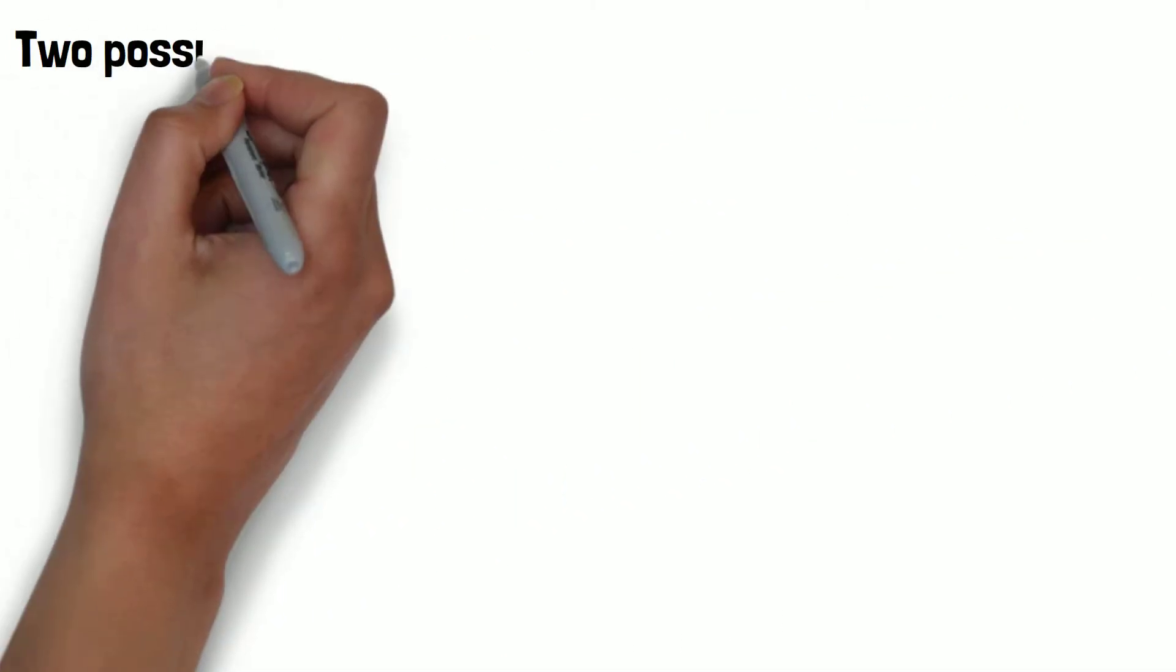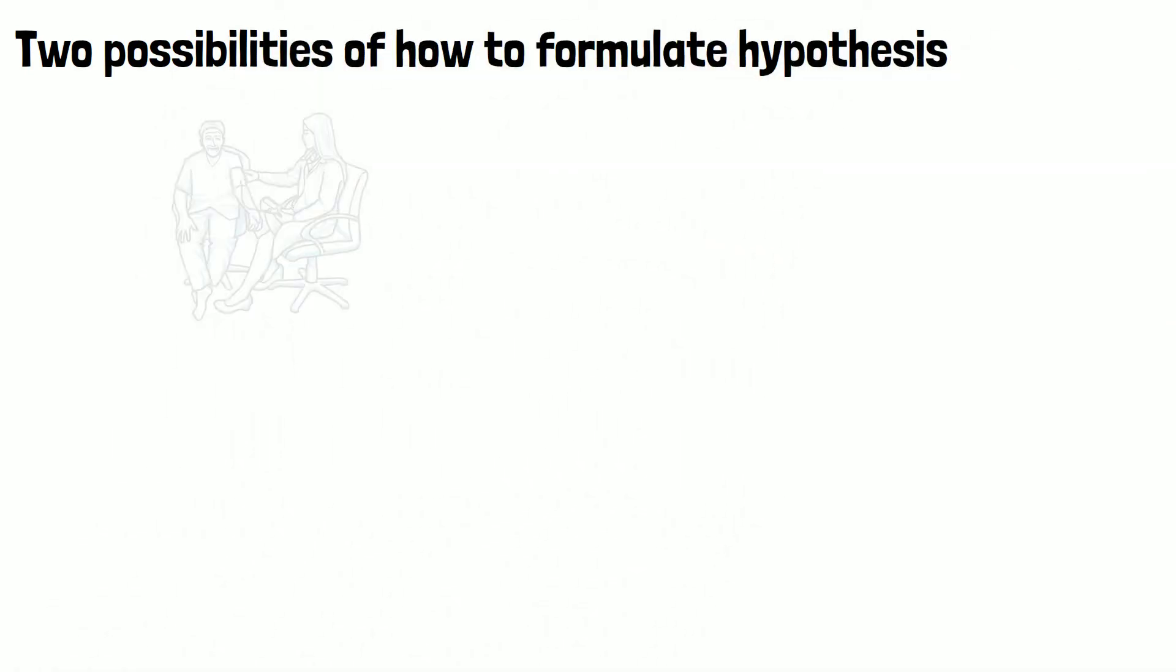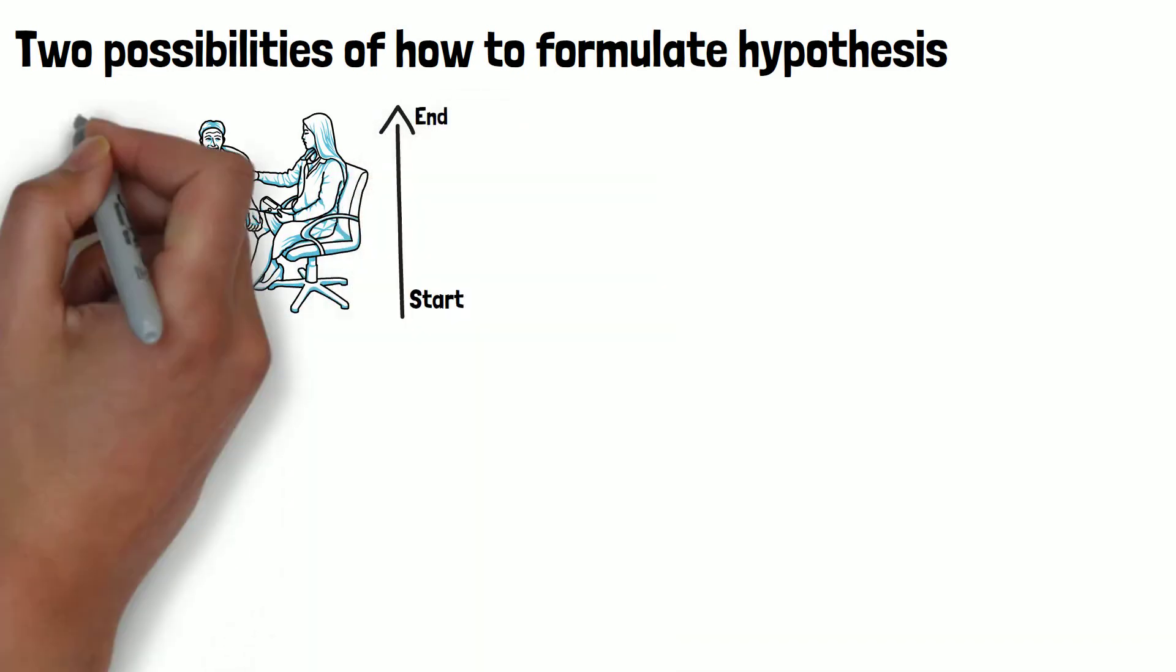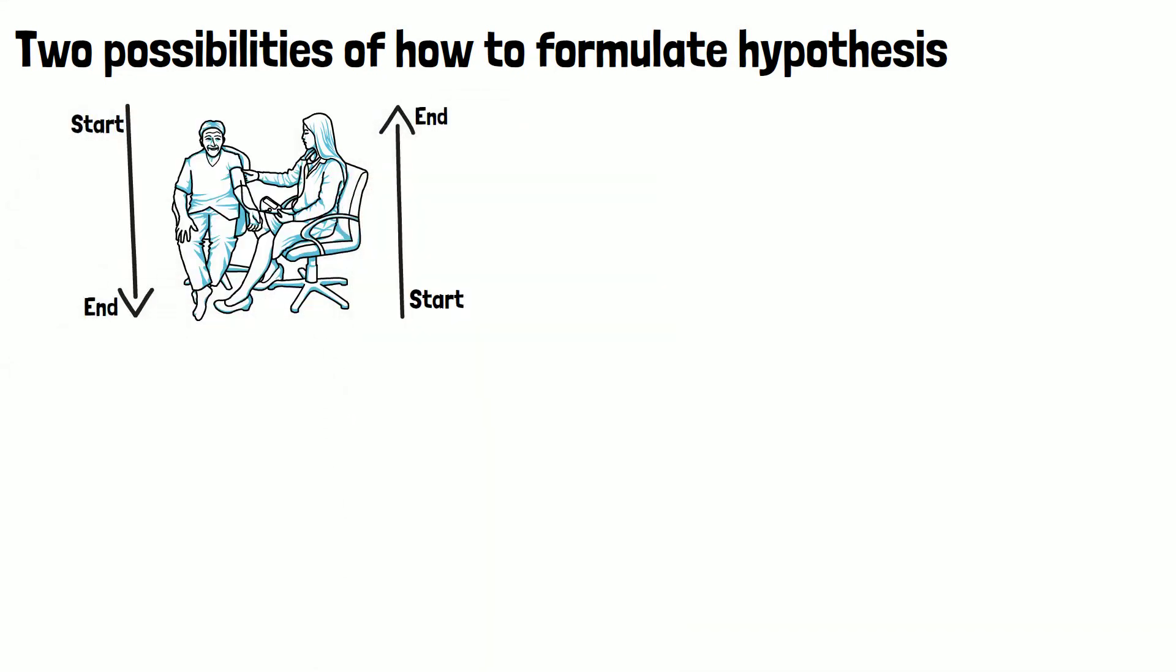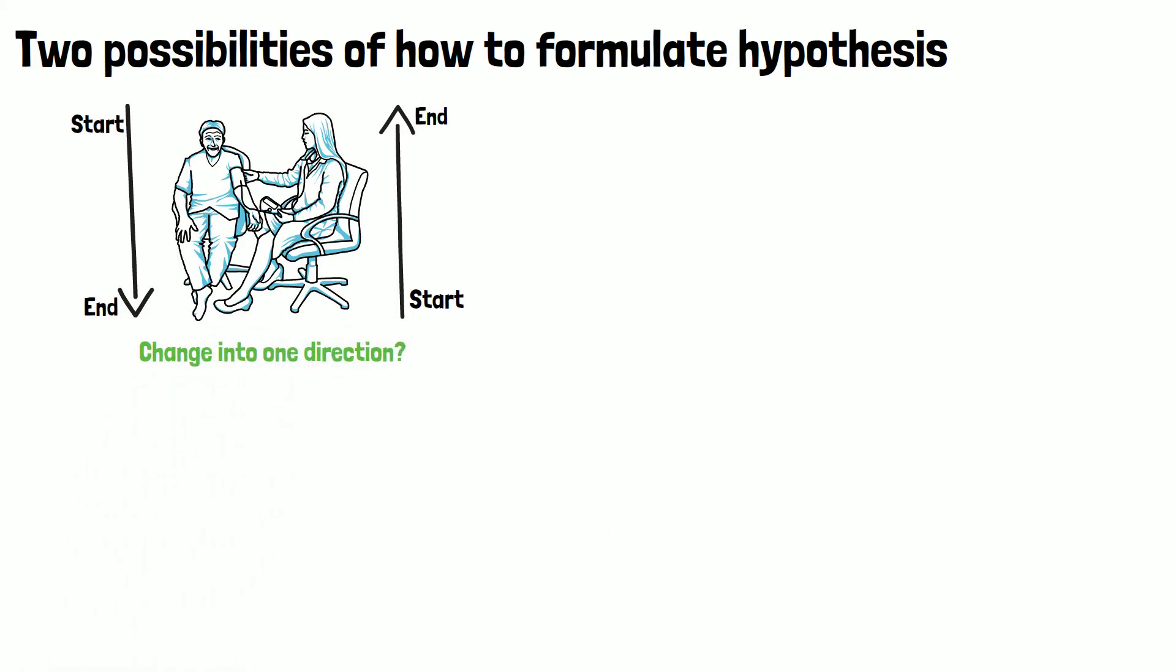There are two possibilities of how to formulate your hypothesis and they depend on your objective. Do you want to prove that the blood pressure is changing into one direction, meaning that you expect it to increase or decrease with time? Or do you not have any expectations and just want to see if there is a change in comparison to the start of the trial?